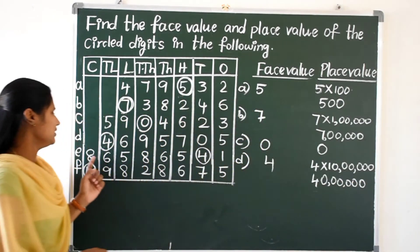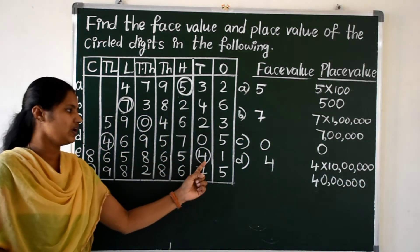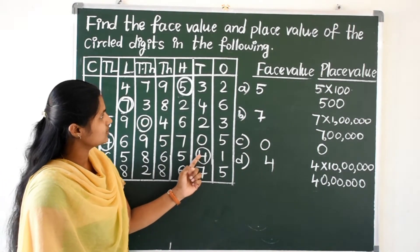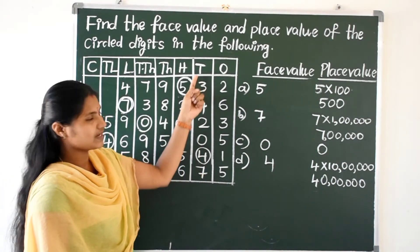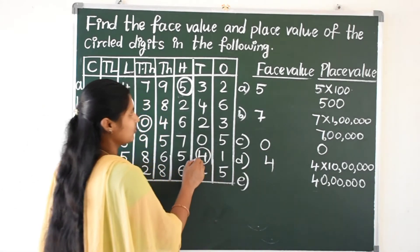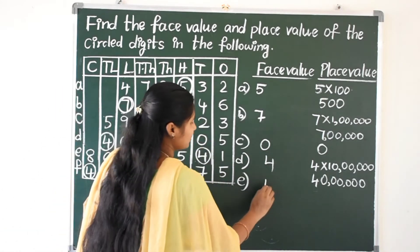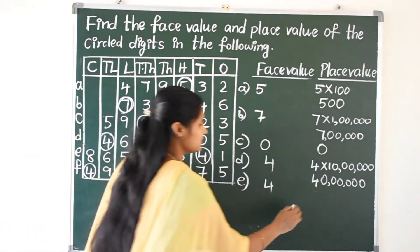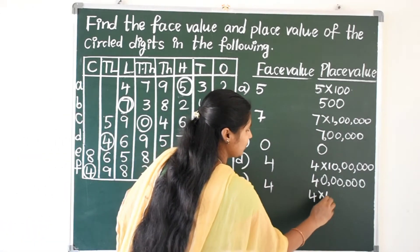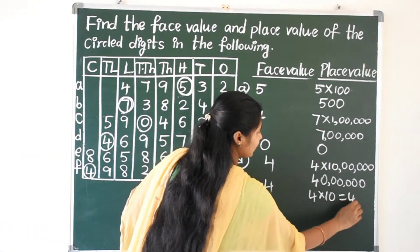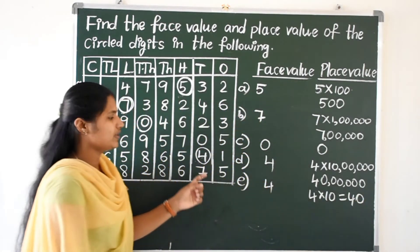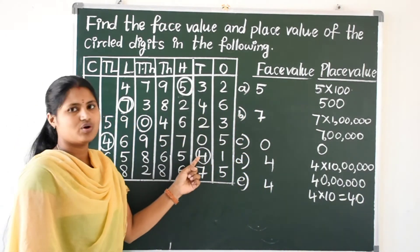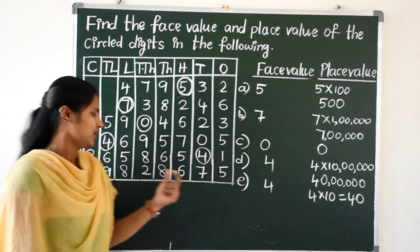Next, the place value and face value of four — four is in the tens place. Four into 10 gives 40. How many tens are there? Four tens, so four tens makes 40. The place value of four here is 40.